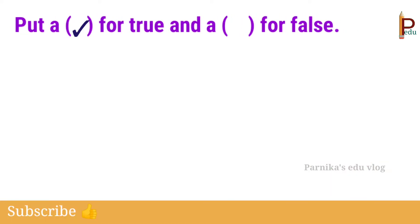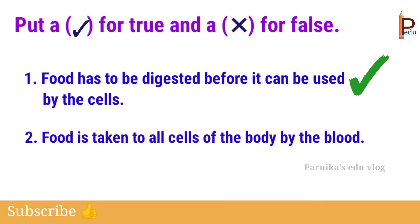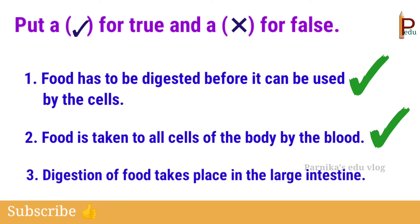Next, put a tick for true and a cross for false. First one: food has to be digested before it can be used by the cells. Second one: food is taken to all cells of the body by the blood — yes, it is true. Third one: digestion of food takes place in the large intestine — it is a false statement.